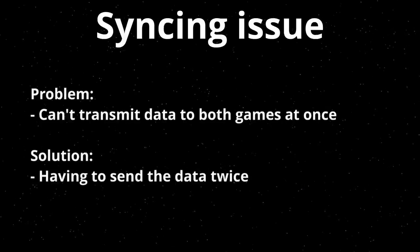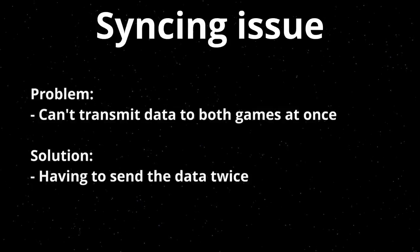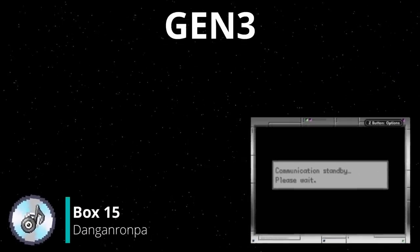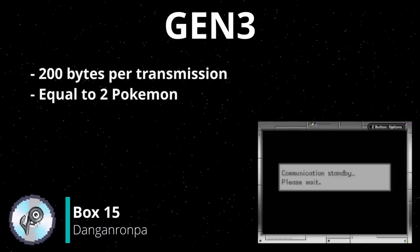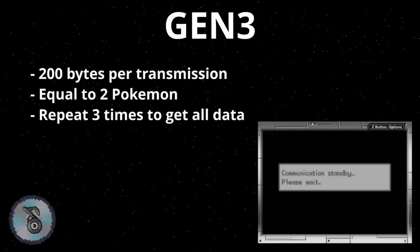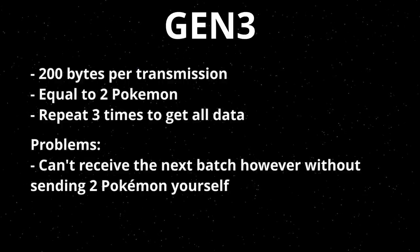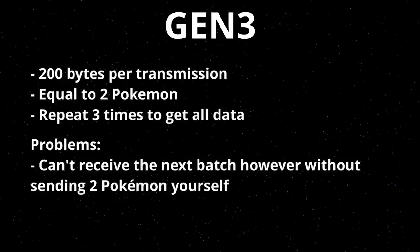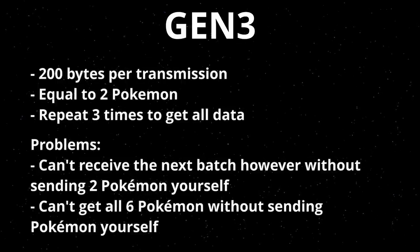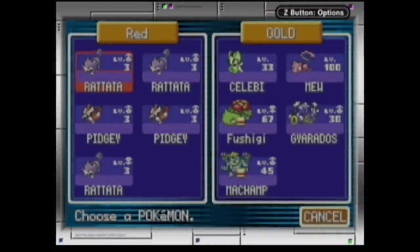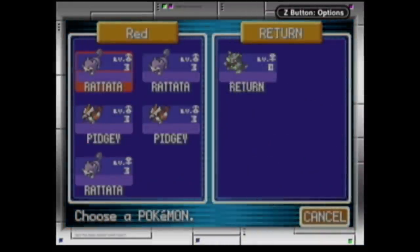And here we unfortunately arrive at our first problem: synchronizing the Pokemon data in one go. Gen 3 sends its data in chunks of 200 bytes, meaning two Pokemon are sent at a time, done a total of three times to send all the data in your party. But before you can receive the next two Pokemon you first have to supply two Pokemon yourself, meaning you can't receive all six Pokemon without supplying Pokemon yourself. Normally this is not an issue, but when you're trying to communicate with Gen 2, it is.